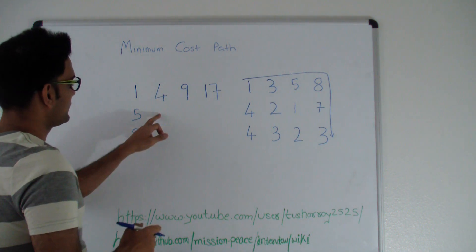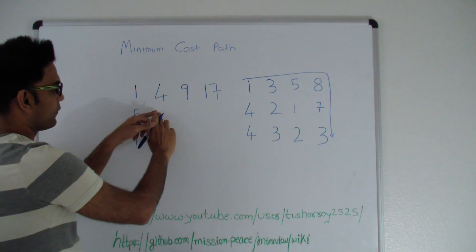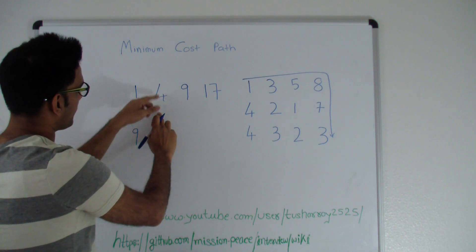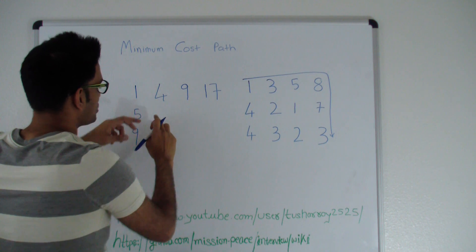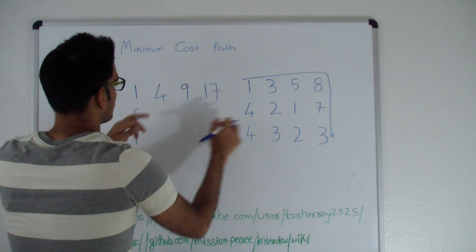To reach this point you have to ask yourself what is the cheaper path: to come from top or to come from left. The minimum of the 2 is 4, so it's cheaper to come from the top. So 4 plus 2 is 6.